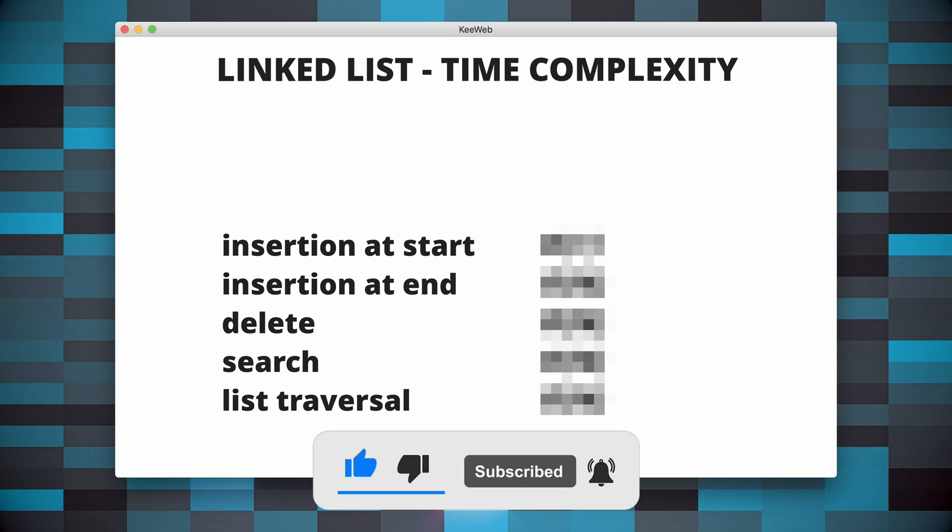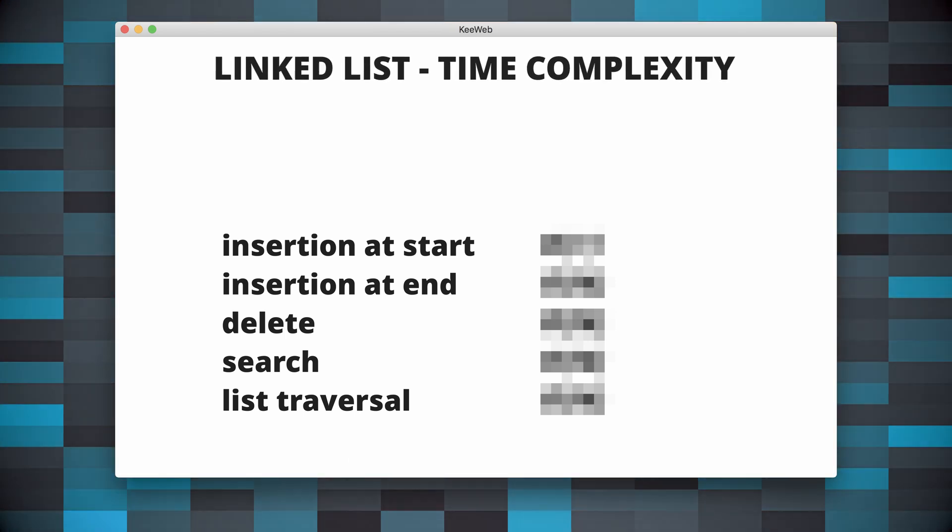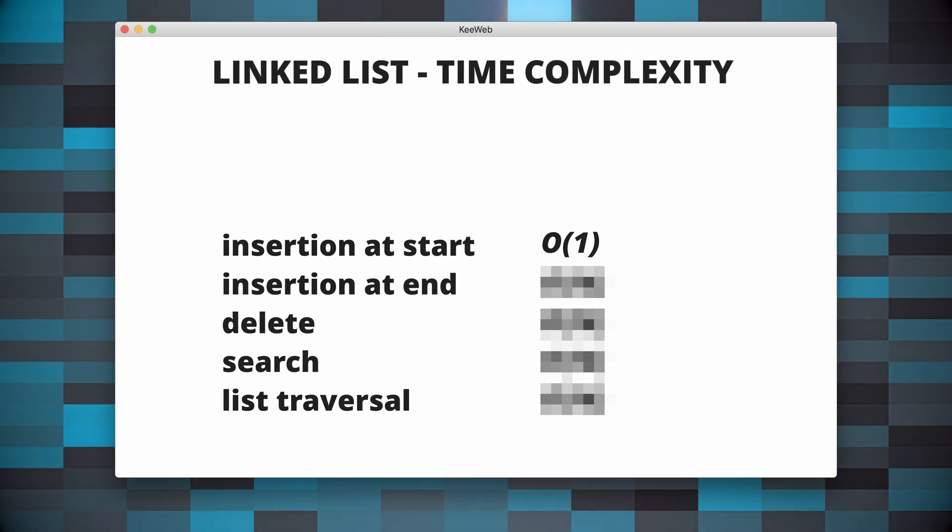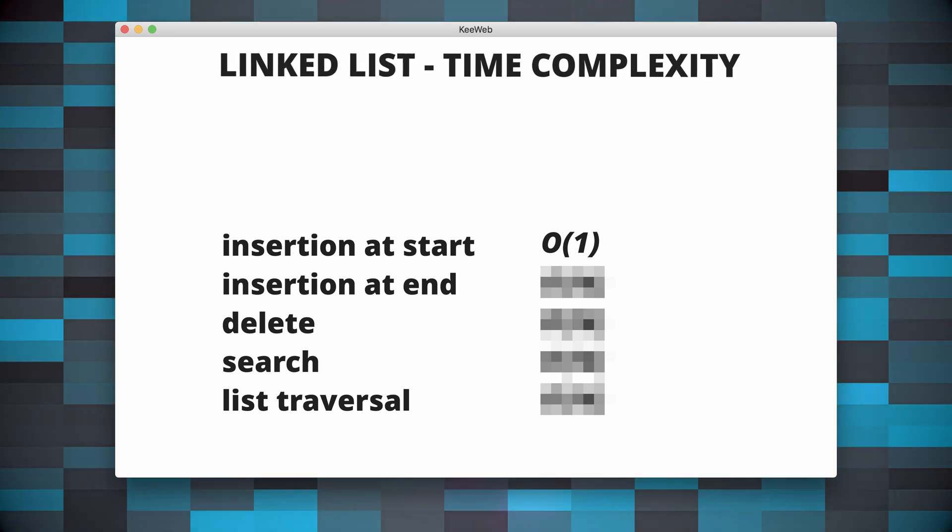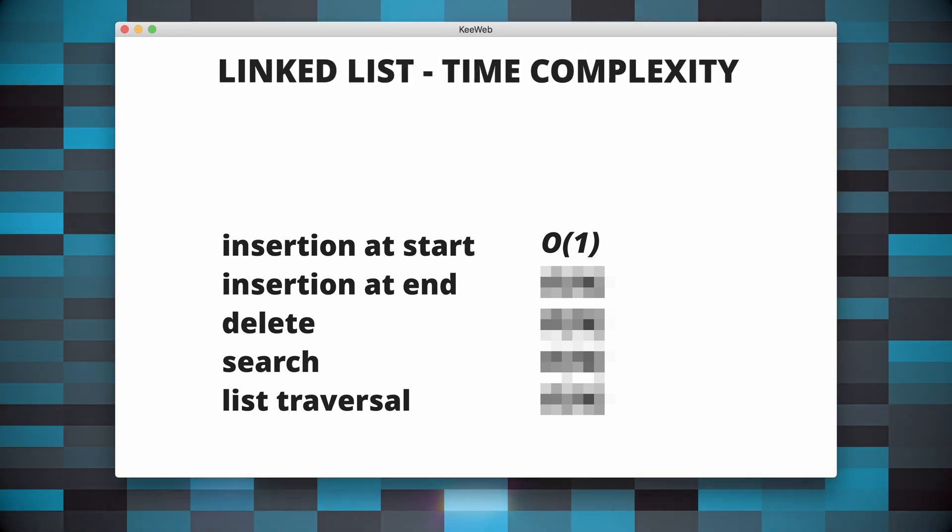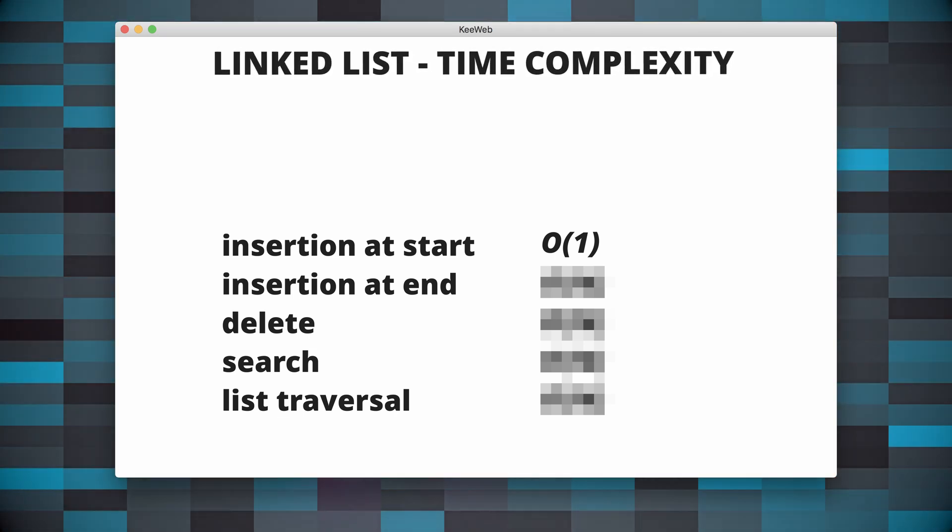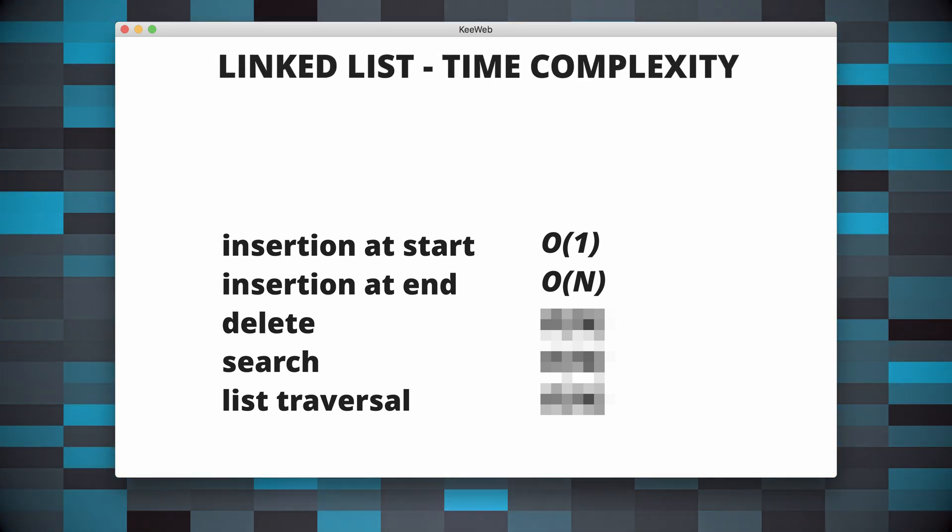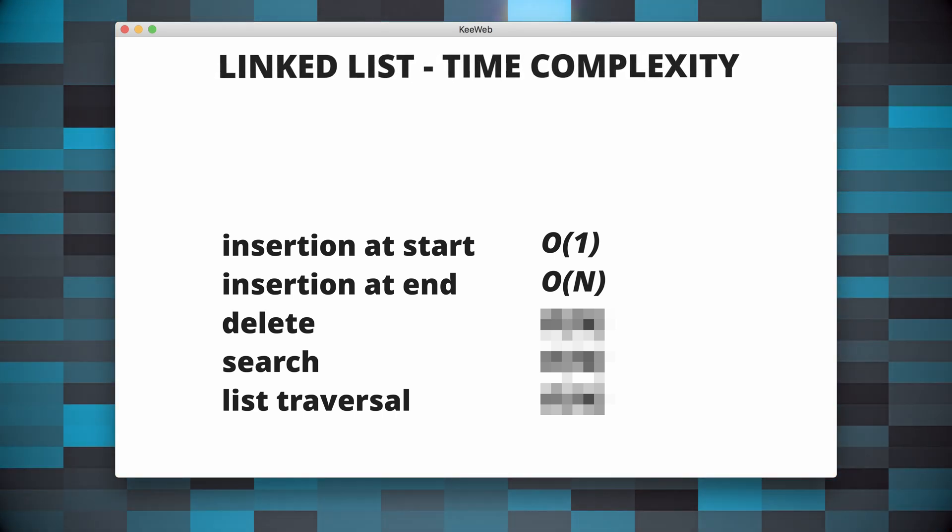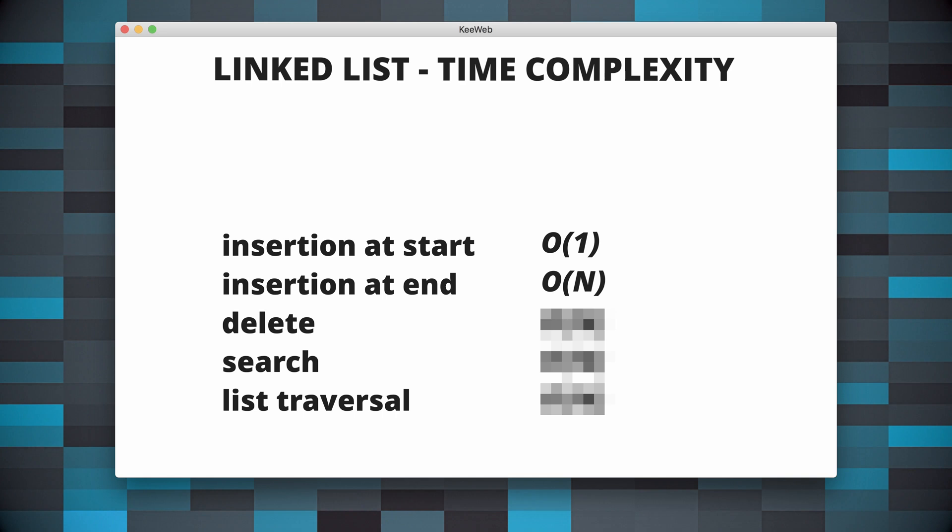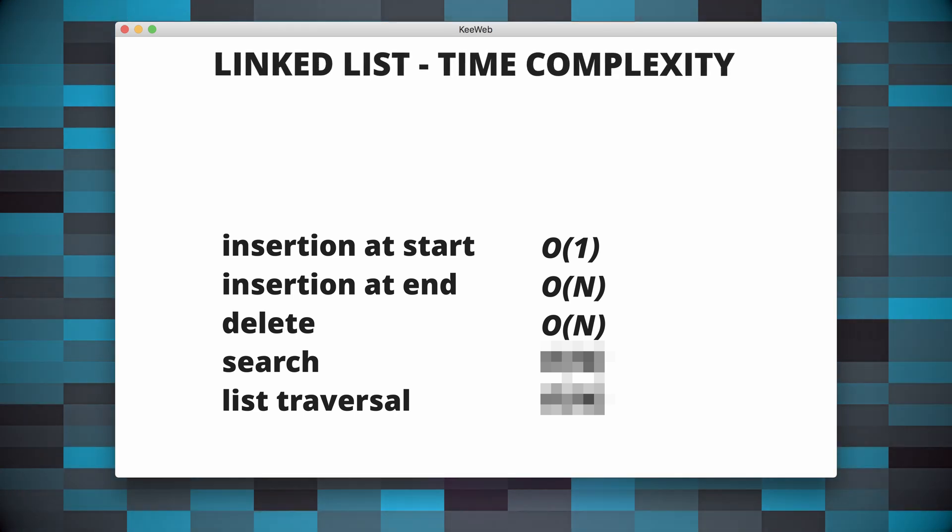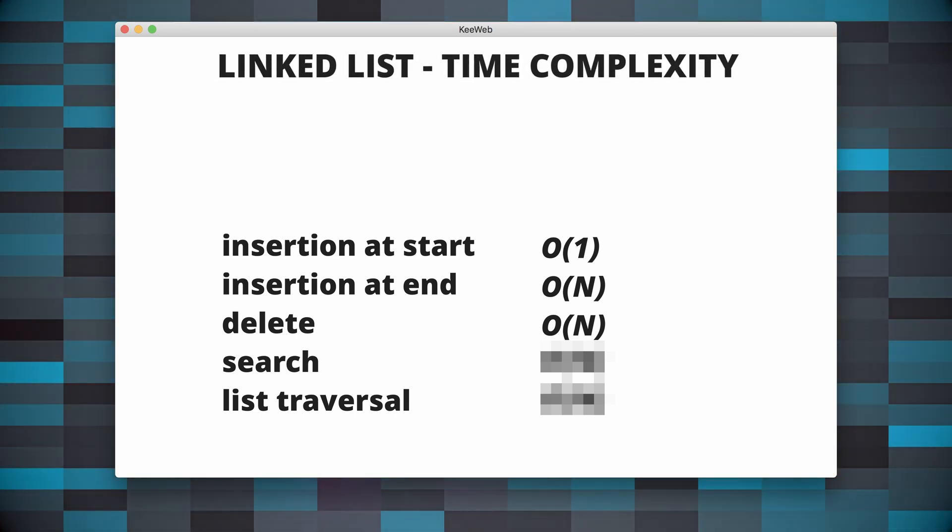Here are the time complexity for some common operations in a singly linked list. Insertion at the beginning takes constant time. Adding a new node at the beginning of the linked list involves creating a new node and updating the next pointer of the new node to point to the current head, so this is a constant time operation. Insertion at the end takes O(n) time. Adding a new node at the end of a singly linked list requires traversing the entire list to find the last node. Deletion of a node takes O(n) time. Deleting a node from a singly linked list involves traversing the list to find the node to be deleted and updating the next pointer of the preceding node.